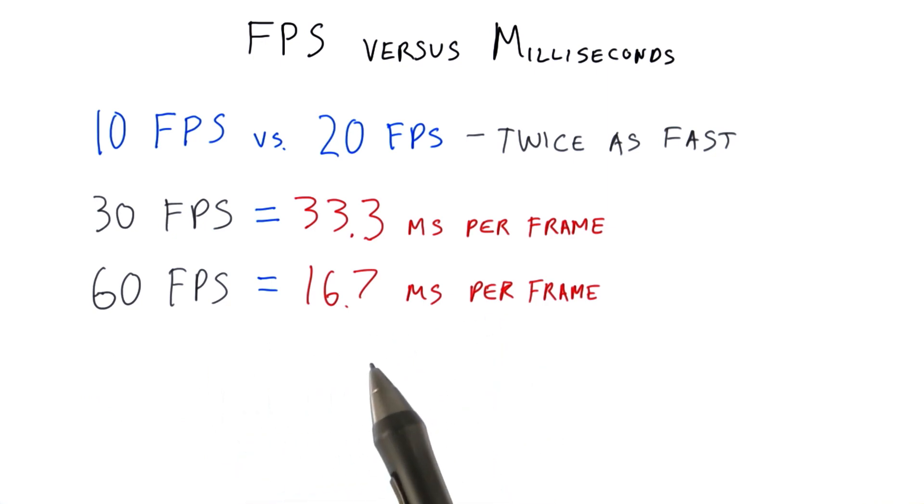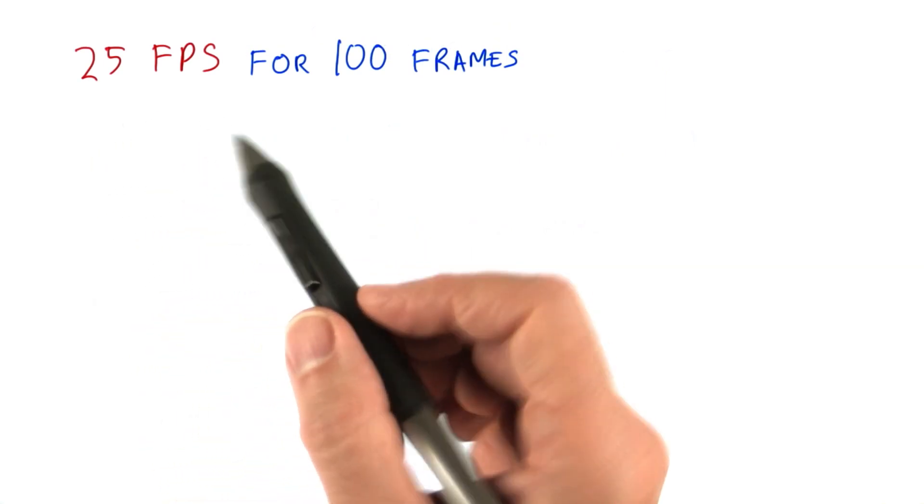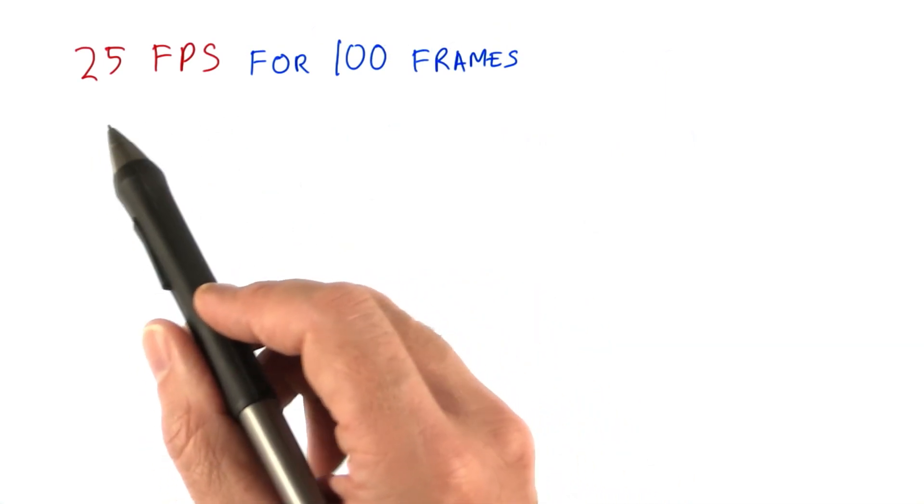Another reason to avoid frames per second is that they're difficult to work with mathematically. So, of course, that's what I'm going to ask you to do, to get a feel for this sort of problem. You measure your application, say it's a walkthrough of a building. Here are the rates you find.